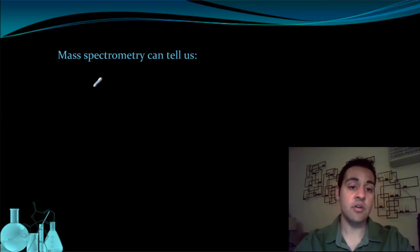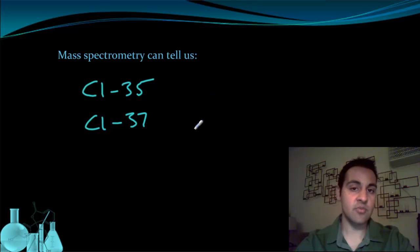For example, chlorine has two isotopes. There's chlorine-35 and chlorine-37. If we put a sample of chlorine into a mass spec,